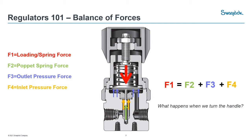What happens when we turn that handle and how does this balance of forces actually work? As we turn the handle down, we compress the spring, which increases our spring force. Something on the right side needs to compensate and balance for that. We've already selected our poppet spring, so that shouldn't be moving, and our inlet force is constant. So that forces our outlet pressure force to increase — and that's how our regulator actually works.